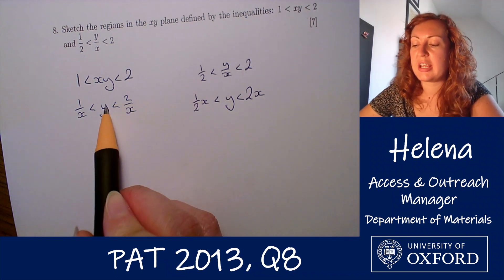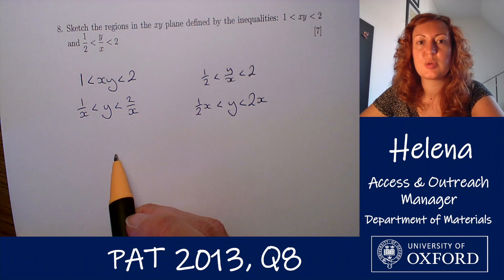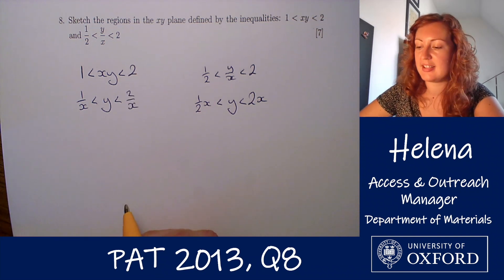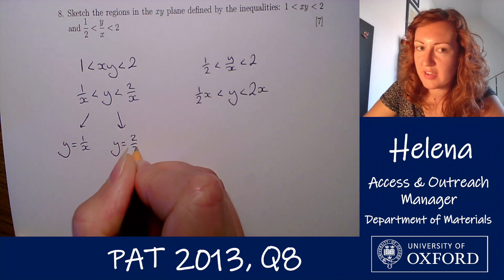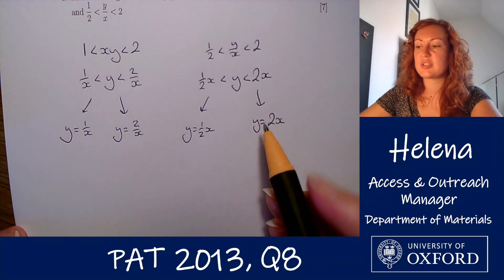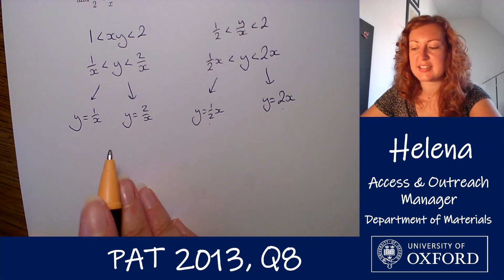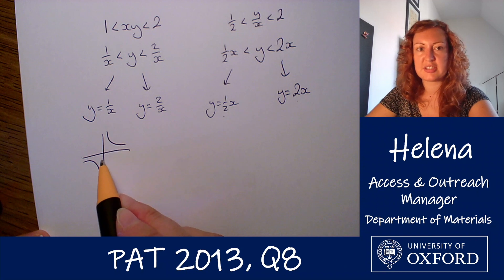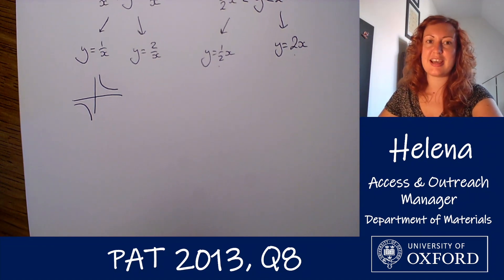We're going to break these inequalities down into two equations each, so each side becomes one line on the graph. That gives us four lines to sketch: y = 1/x, y = 2/x, y = ½x, and y = 2x. We have two straight lines — one with gradient ½ and one with gradient 2 — and two curves of the form 1/x. The general shape of a 1/x graph is asymptotic at each axis, and the 2/x graph is essentially the same shape with each point multiplied by two.